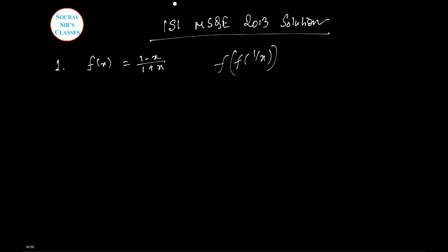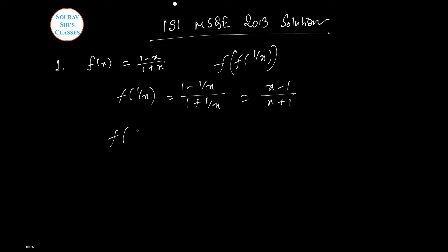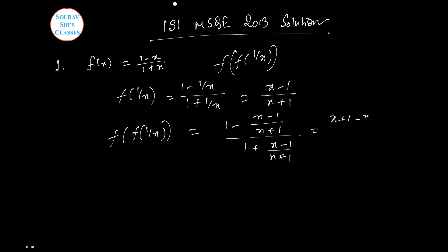This is a very easy question. To solve it you need a little bit of skill with functions. Find f of 1 by x first: replace 1 minus x with 1 minus x and 1 plus x accordingly, giving x minus 1 by x plus 1. Then f of f of 1 by x: combining, the numerator becomes x plus 1 minus x plus 1 and denominator x plus 1 plus x minus 1, which simplifies to 1 by x. That's the end of question one.